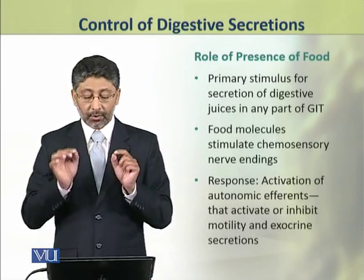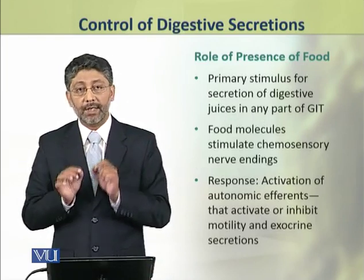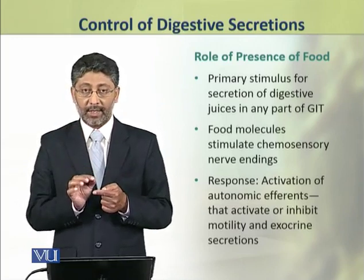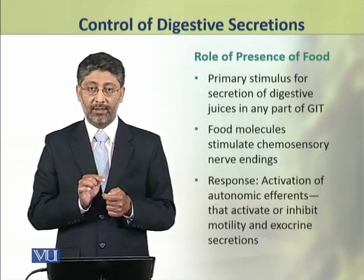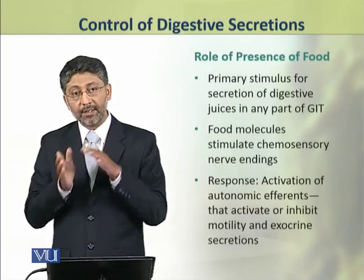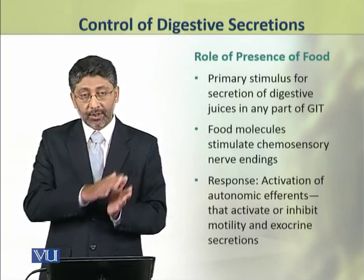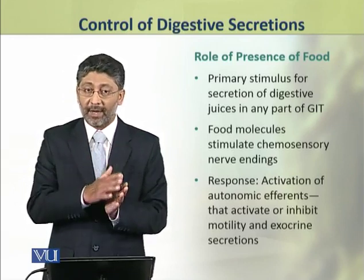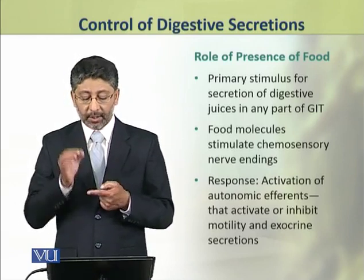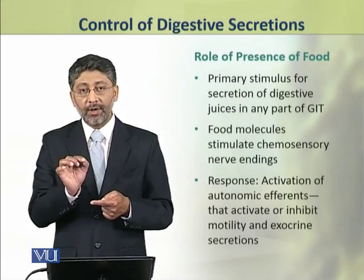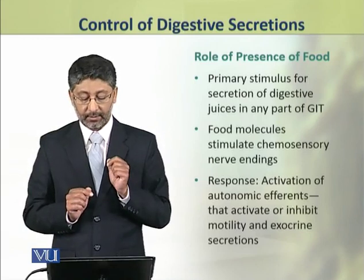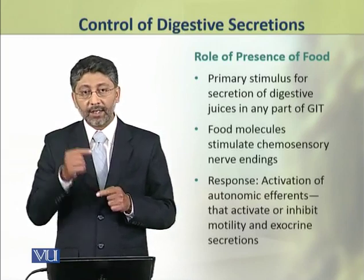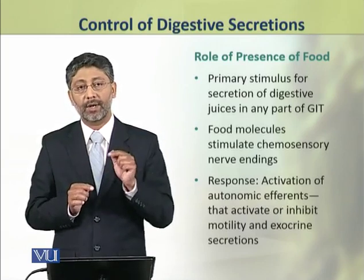Now we shall discuss the role of presence of food on digestive secretions. The primary stimulus for digestive juice secretions is the presence of food. In whichever part of the gastrointestinal tract food is present, secretions are comparatively higher there, and where food is absent, secretions remain comparatively lower. This happens because the food molecules stimulate the chemo-sensory nerve endings which act on the autonomic efferents, which activate or inhibit motility and exocrine secretions.